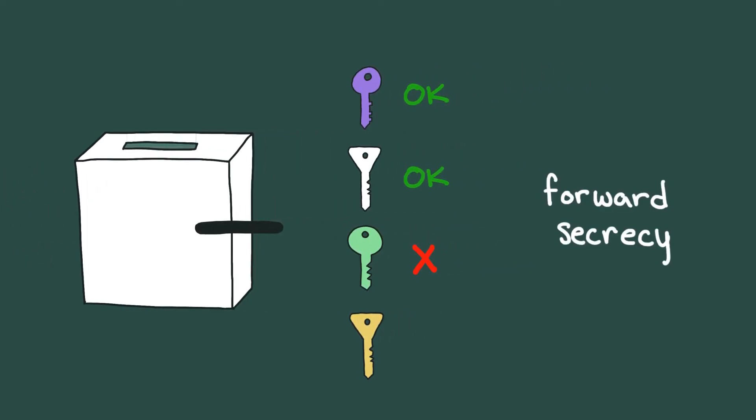This is a property known as forward secrecy or forward security. A message is still secret if a future key is compromised. But honestly, I just find the name kind of backward. Maybe it's a matter of perspective. Regardless of the name, it's a great property to have.